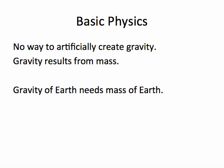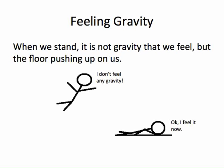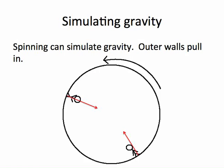Just a couple quick things about the basic physics in the movie. There's no way to artificially create gravity. Gravity results from mass, at least as we understand it right now. So in order to have the gravity of the Earth, you need the mass of the Earth, or something more dense, but a smaller radius. And so, but what we feel is not so much gravity, what we feel is the floor pushing back up on us.